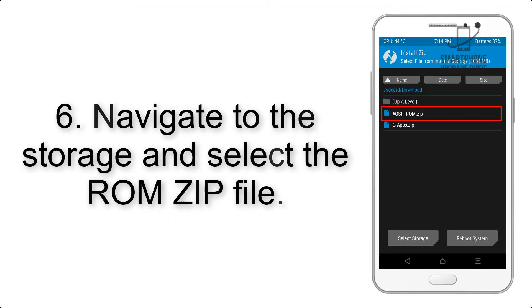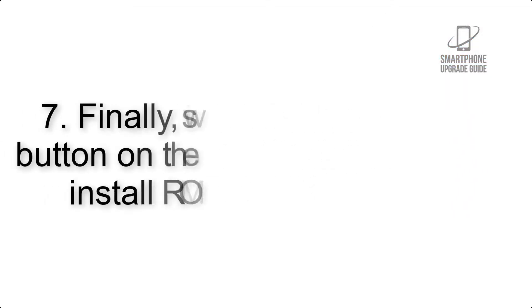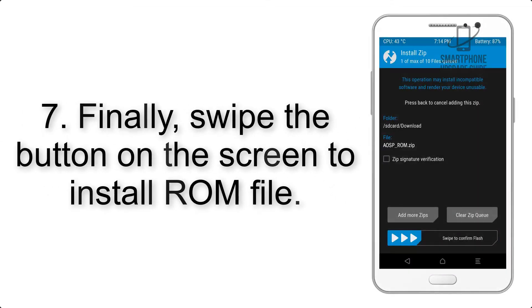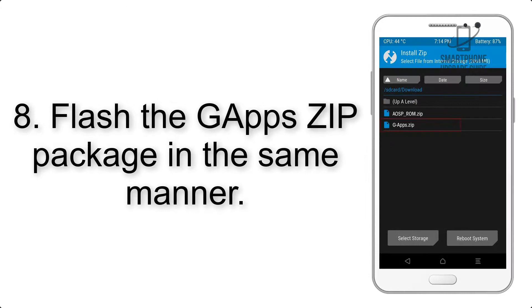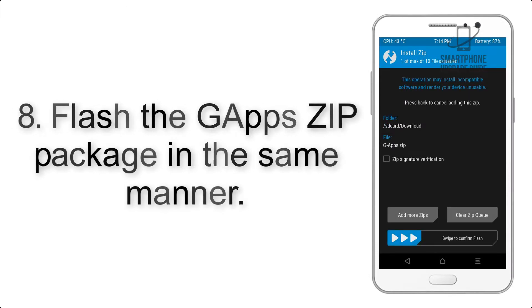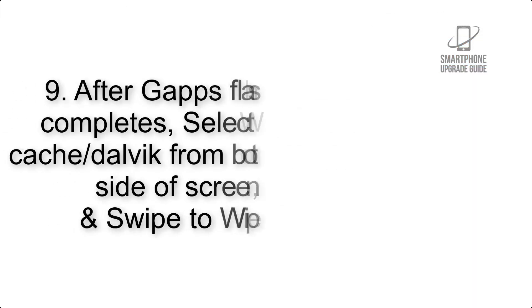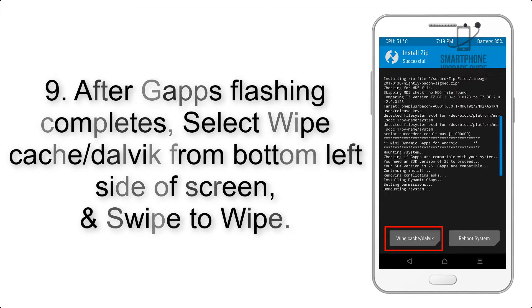Step 5: Go back to the recovery main screen and tap on the Install button. Step 6: Navigate to the storage and select the ROM zip file. Step 7: Swipe the button on the screen to install the ROM file. Step 8: Flash the GApps zip package in the same manner.